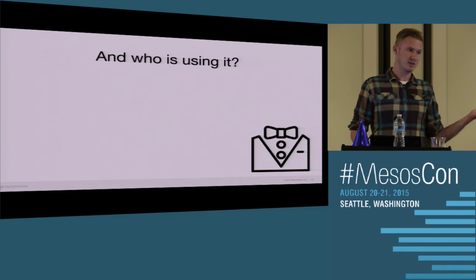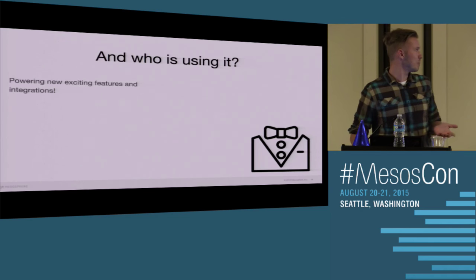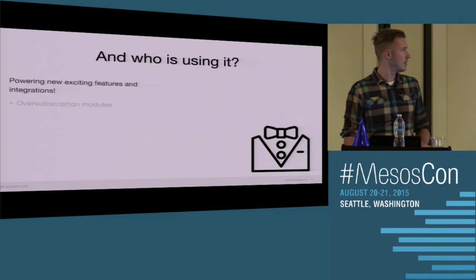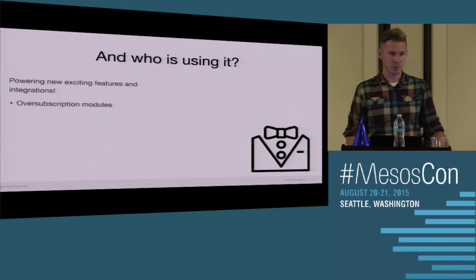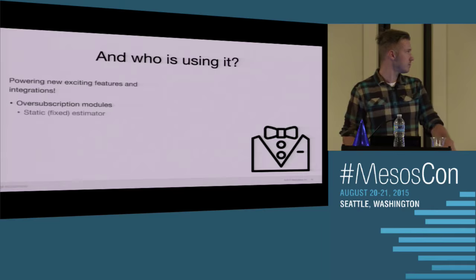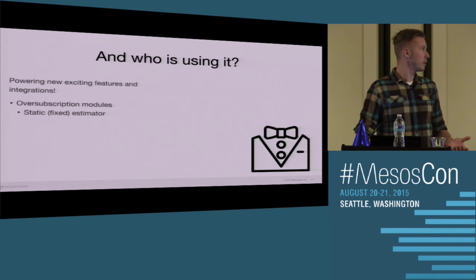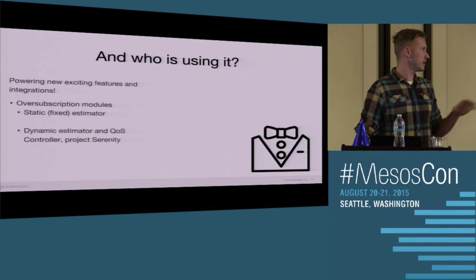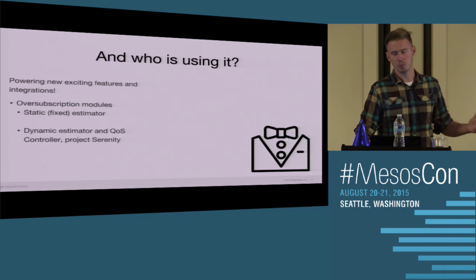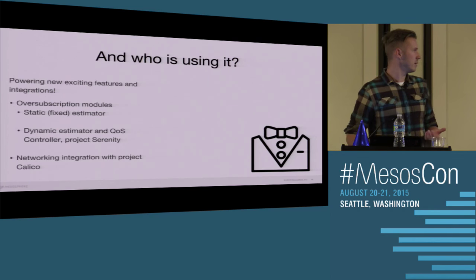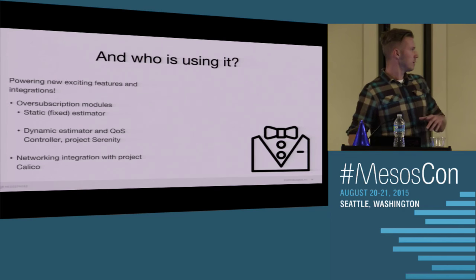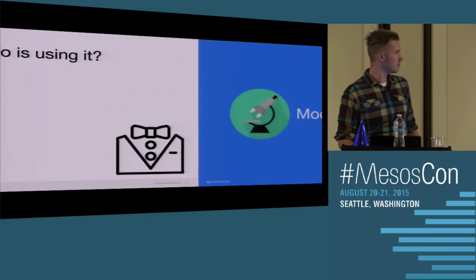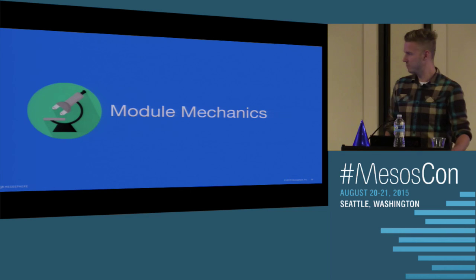So who's actually using this, other than us? It's powering a new set of pretty exciting features and integrations. This morning you saw oversubscription, which is enabled purely by modules. Mesos ships with a pre-built one called the fixed resource estimator, but what you saw this morning is a dynamic estimator and QoS controller called Project Serenity, developed together with Intel. And later today you'll see network integration with Project Calico, also enabled with modules.